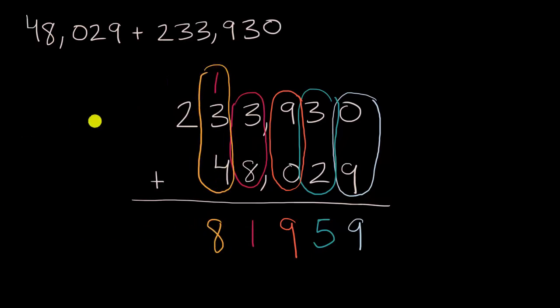And then last but not least, we have these 200,000s right over there, and we're done. Two hundred eighty-one thousand nine hundred and fifty-nine. Did you get the same answer?